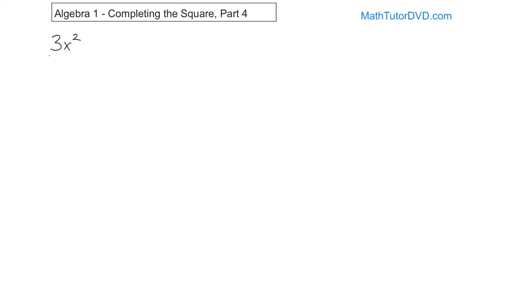Now we'll do that again in this problem: 3x squared over 4 minus 3 is equal to x over 2. This is cumbersome for lots of reasons. First, we have an x squared term but three-fourths is our coefficient, so we need to make that 1. We also have a constant term that we need to move, and the x term needs to be moved to the other side. So we have a lot of work to do.